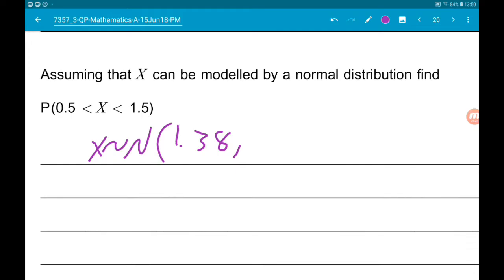We can use our calculators to do this. You want distribution, normal CD. For the lower bound use 0.5, upper 1.5, sigma 0.527, and mu 1.38.